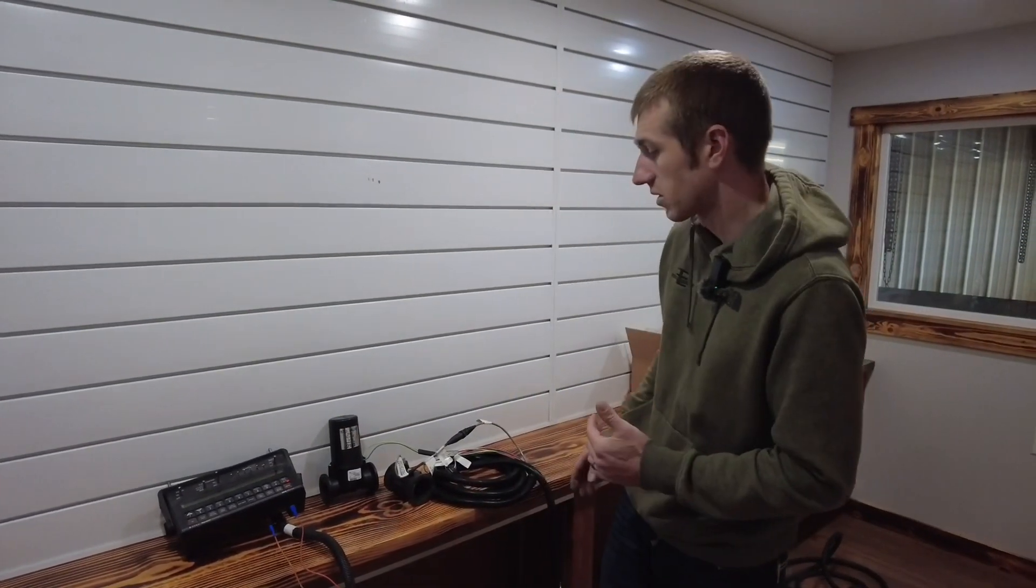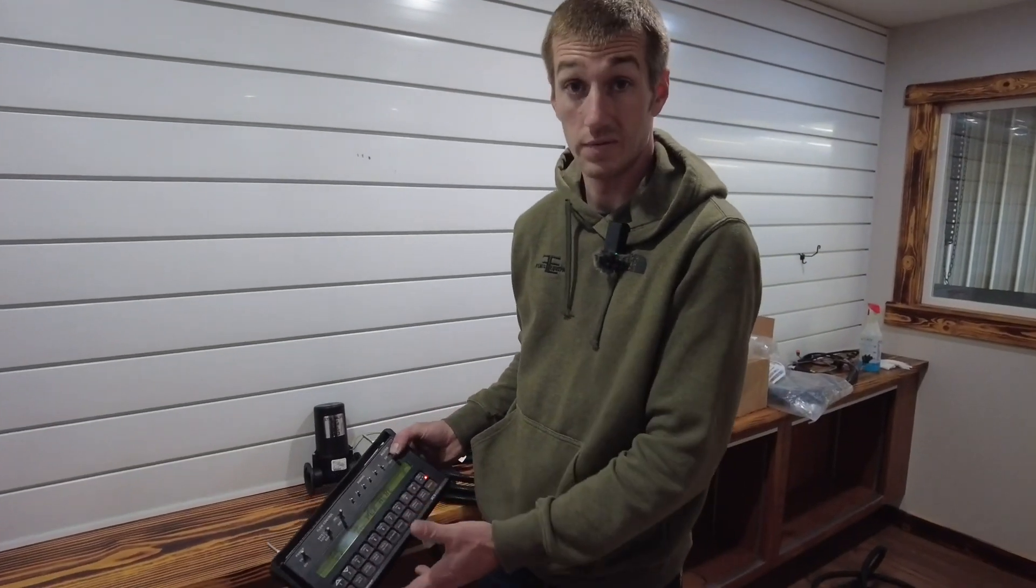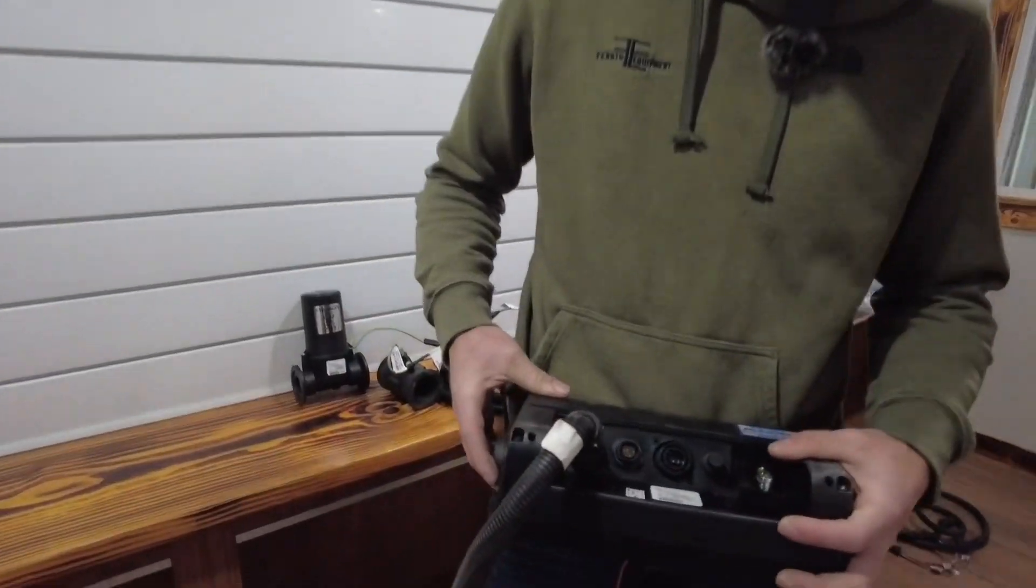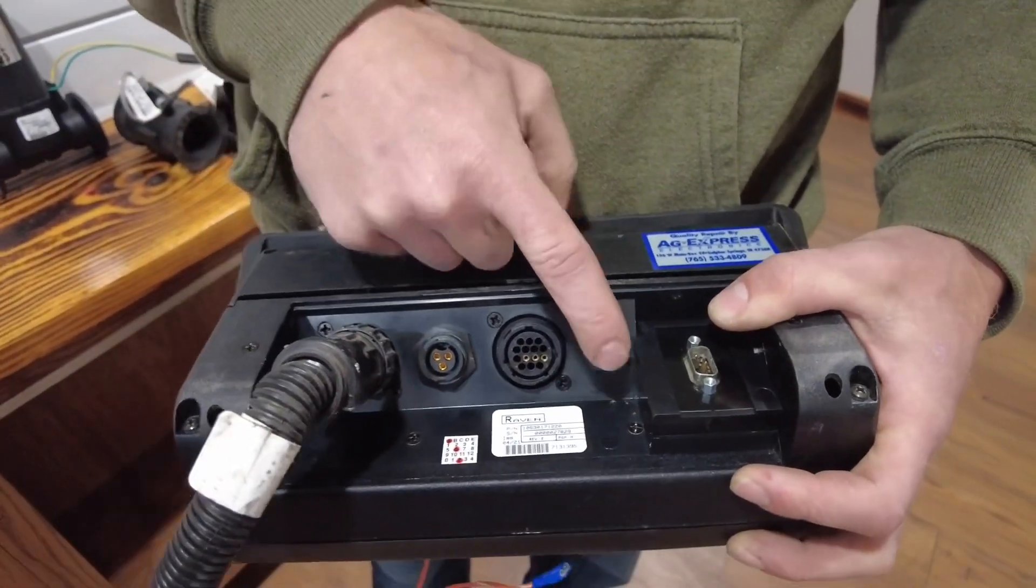So I want to start off with the console. Obviously I hope that you have a Raven 440 or 450 console or else you wouldn't be watching this video. Let's go to the back side of it. This is a fuse right here. So if you ever have power issues, check that fuse.